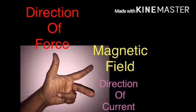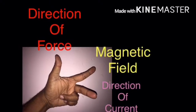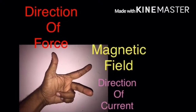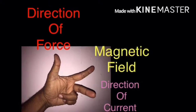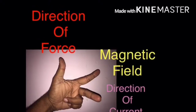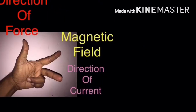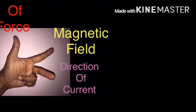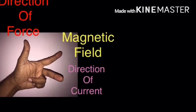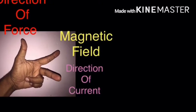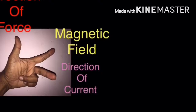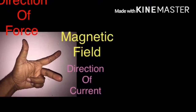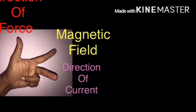I'm talking about the picture here. Looking at the left hand, you can determine the direction of force, the direction of the magnetic field, and the direction of current. These three are the relationships described in Fleming's left-hand rule.